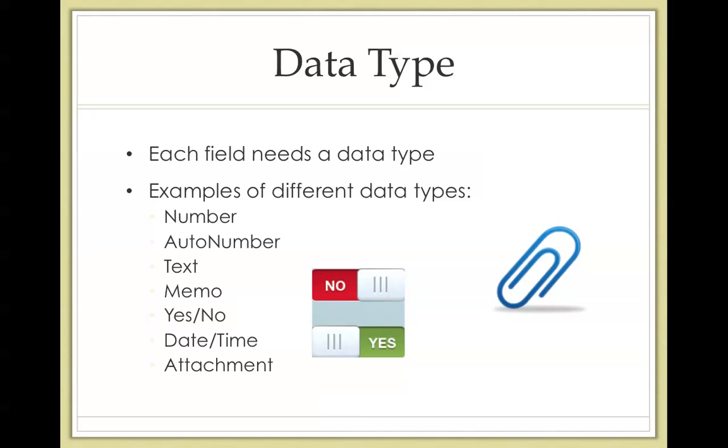The yes and no data type is quite self-explanatory, as it allows only two options, either yes or no, or any other two options you can think of. The date and time type is, once again, just like the yes or no type, quite simple. It shows the date and time in the computer's format. Finally, the attachment type is used for adding files of any type.